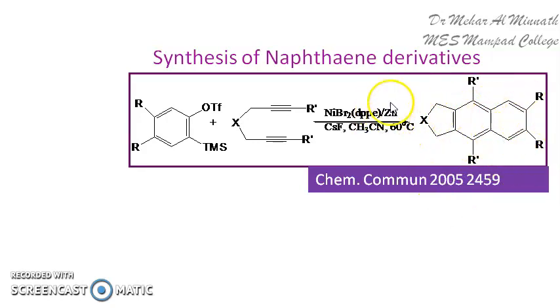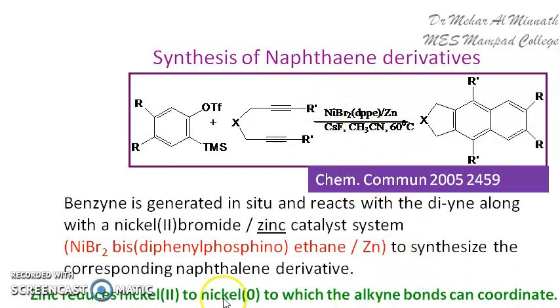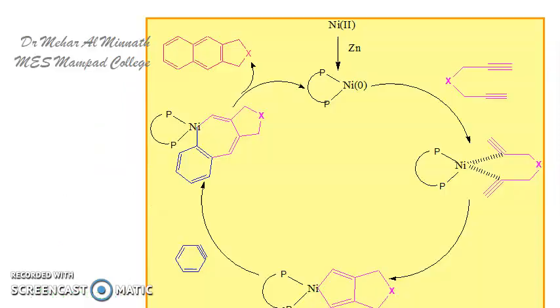You are using zinc here. Zinc helps in the conversion of Ni(II) to Ni(0). It is the benzyne which reacts with the diyne. The zinc reduces Ni(II) to Ni(0), and it is to this Ni(0) that the alkyne gets bonded. Initially you have the Ni(II) complex, and the zinc reduces it to Ni(0), because of which this particular diyne can get coordinated to the nickel.